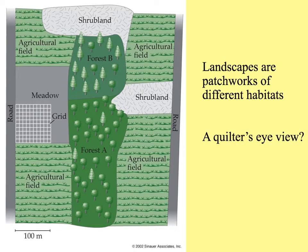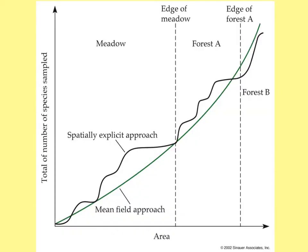As this figure from our book shows, a landscape is really a patchwork of different habitats, sometimes occurring more or less regularly over the landscape, sometimes with a certain habitat being unique. In this picture you can see how in the meadow habitat, a grid has been superimposed to sample plots of vegetation. Depending on the approach you take, sampling more plots as in the mean field approach, or the spatially explicit approach stepping back from fine scale to larger scale, both can give good approximations of the total number of species sampled, sometimes more or less accurate depending on the scale.